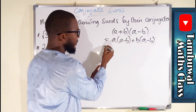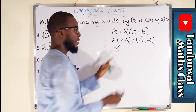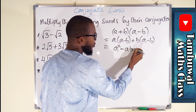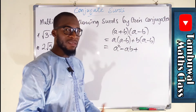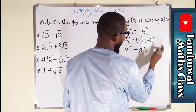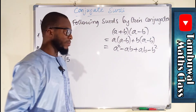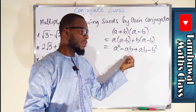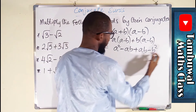Expanding: a times a is a squared, a times negative b is negative ab. Then we move to the other term: b times a is ab, and b times negative b is negative b squared. Look at the middle terms — they are opposites: negative ab plus ab equals zero. So we only have a squared minus b squared.